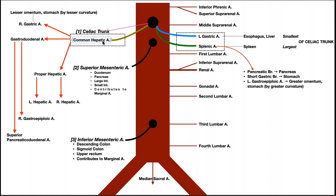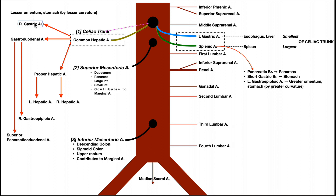The third branch of the celiac trunk is the common hepatic artery, which gives off three branches. The first is the right gastric artery — note that the left gastric artery is a direct branch of the celiac trunk, whereas the right gastric comes off the common hepatic. The right gastric artery supplies the lesser omentum and the lesser curvature of the stomach, the superior part.